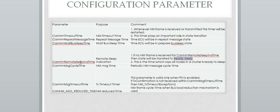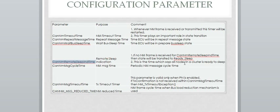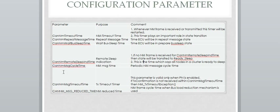The Remote Sleep Indication timer is used globally — across all nodes, this timer value will be the same. It is used to indicate to all nodes that all other nodes in the cluster have gone to Ready Sleep. Then we have CAN-NM Message Cycle Time, which is the periodic NM message cycle time. We also have CAN-NM Message Timeout Time, which is the TX timeout time, and this parameter is valid only when partial networking is enabled.